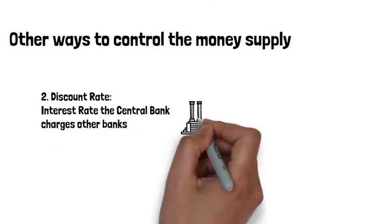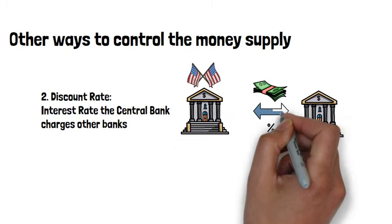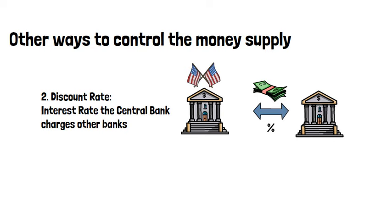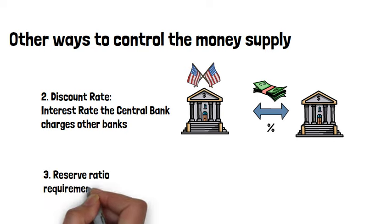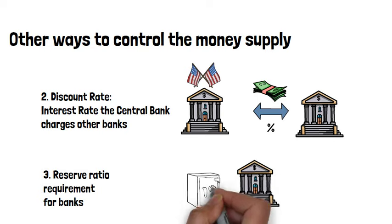The central bank also impacts the money supply by setting the interest rate it charges other banks, called the discount rate. A final way to control the money supply is through the reserves it requires banks to hold. This is called the reserve ratio requirement and refers to the percentage of deposits that a bank must keep in reserves. The more money that banks need to keep in reserve, the less money is circulating in the economy.